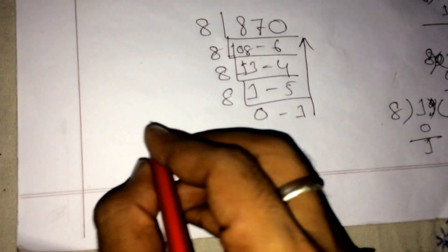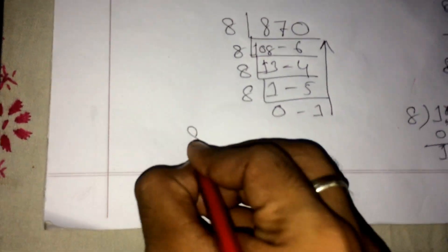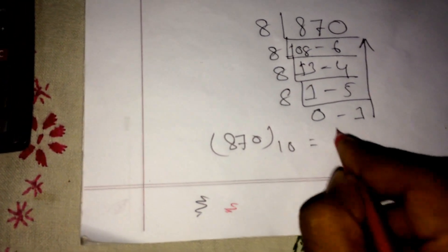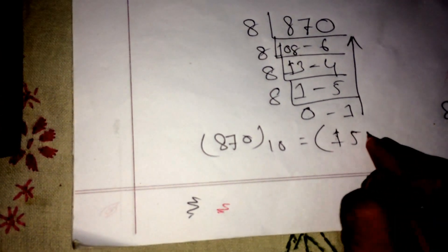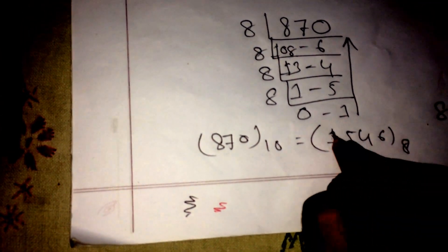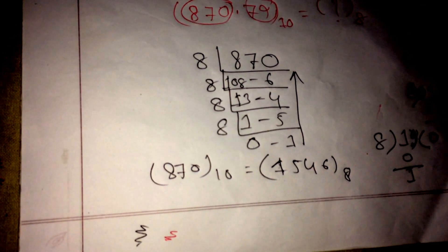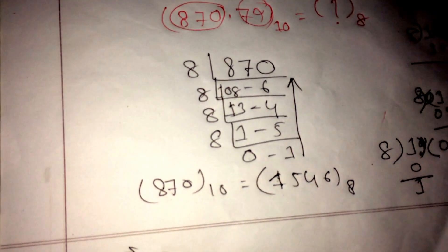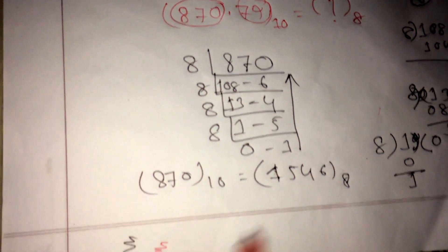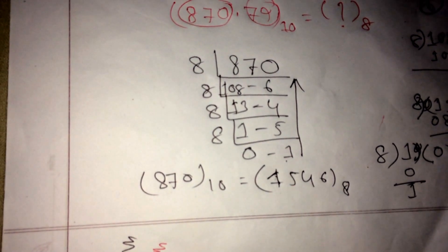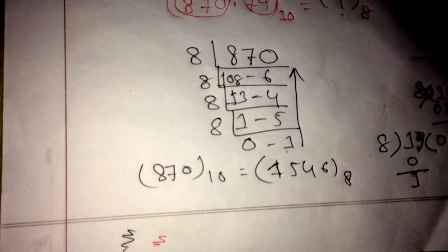Reading the remainders from LSB to MSB — bottom to top — we get that 870 decimal equals 1546 in octal. This completes the integer portion.